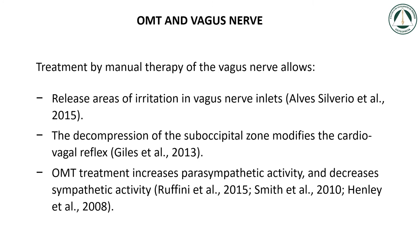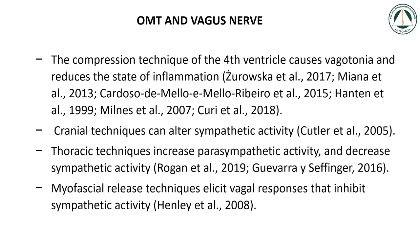OMT and vagus nerve. Treatment by manual therapy of the vagus nerve allows release of areas of irritation in vagus nerve inlets (Alves Silvario et al., 2015). The decompression of the suboccipital zone modifies the cardiovagal reflex (Giles et al., 2013). OMT treatment increases parasympathetic activity and decreases sympathetic activity (Ruffini et al., 2015; Smith et al., 2010; Henley et al., 2008). The compression technique for the fourth ventricle causes vagatonia and reduces the state of inflammation (Tsurowska et al., 2017; Miano et al., 2013; Cardo Soda Melo y Melo Ribeiro et al., 2015; Hanton et al., 1999; Milnes et al., 2007; Curie et al., 2018).